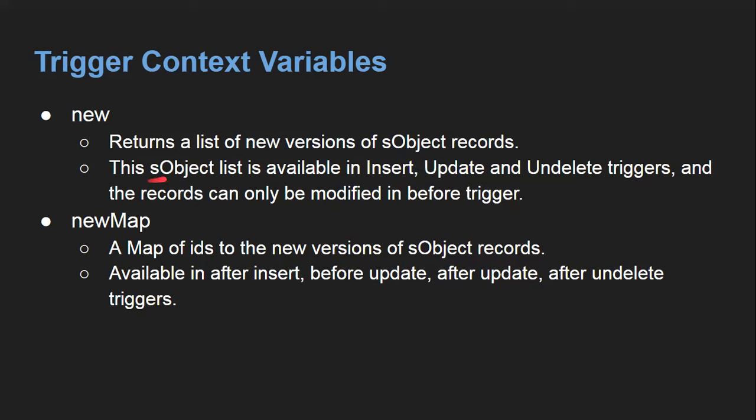Next we have Trigger.newMap — a map of IDs to the new version of SObject records. This is available in after insert, before update, after update, and after undelete. Trigger.newMap is not available in before insert because in the before insert event we won't have the ID of the record yet — the ID is available after insert. For before update and after update, the ID is already available since we are updating an existing record.